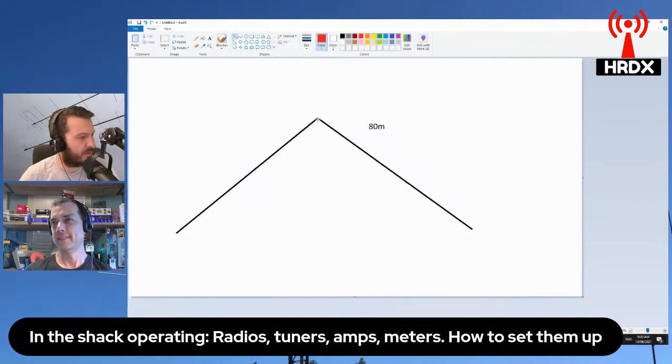So you've got one common feed point here in the middle and you've got one leg from each dipole. If you add another leg